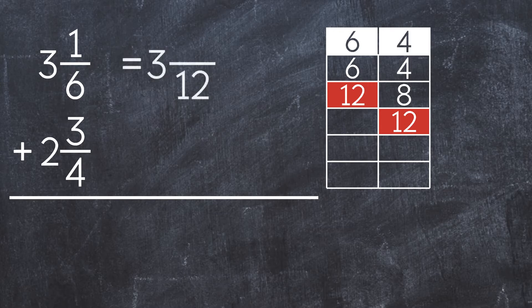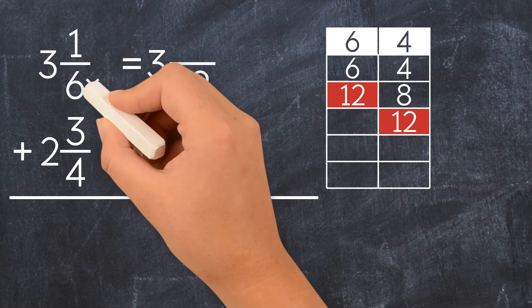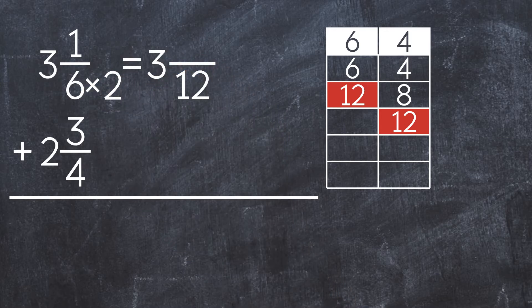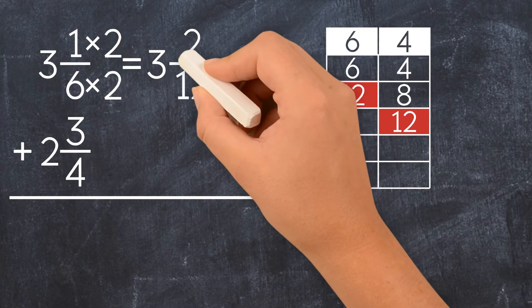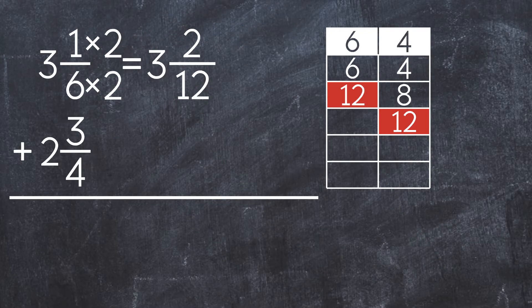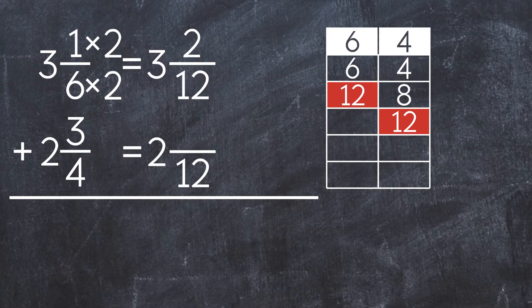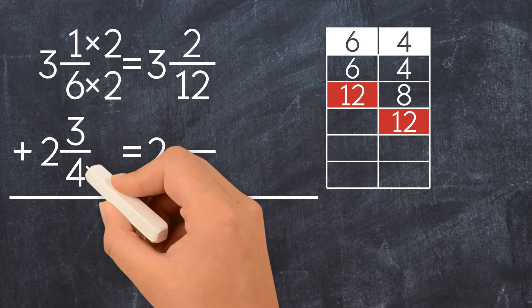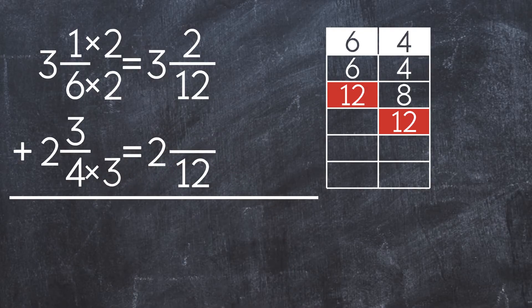To get 12 in the denominator, we multiply 6 times 2. We also multiply the numerator by 2 to get 3 and 2 twelfths. Then we have to multiply the numerator by 3 to get 2 and 9 twelfths.